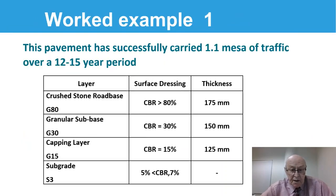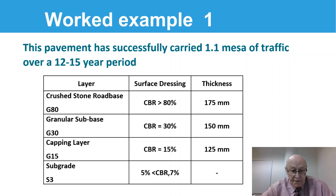This is an example. This pavement has successfully carried 1.1 million equivalent standard axles of traffic over a 12 to 15 year period. The example shows a crushed stone road base, a granular sub-base, a capping layer, and the subgrade is category S3, which is a CBR of between 5 and 7%. The slide shows the thicknesses of the layers in this particular road.